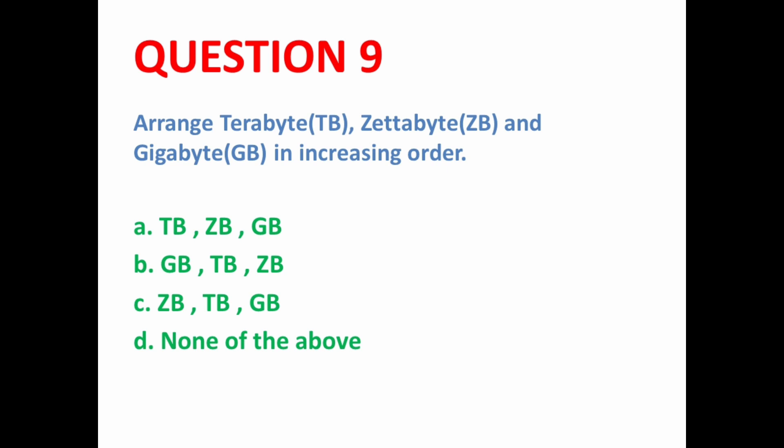Next MCQ: Arrange terabyte, zettabyte, and gigabyte in increasing order. The smallest unit among these is gigabyte (GB), then terabyte (TB), then zettabyte. So the correct increasing order is GB, TB, then zettabyte — option B is the correct option.